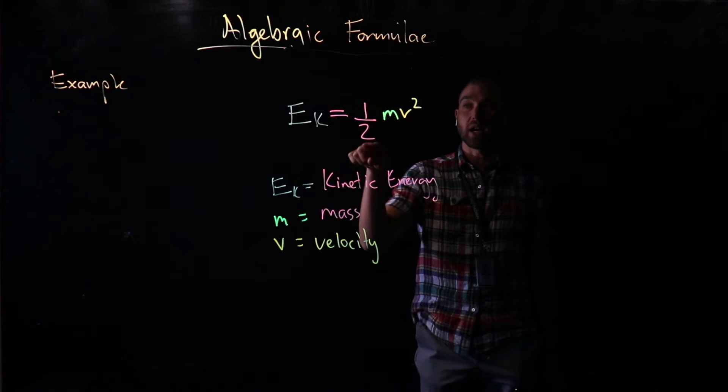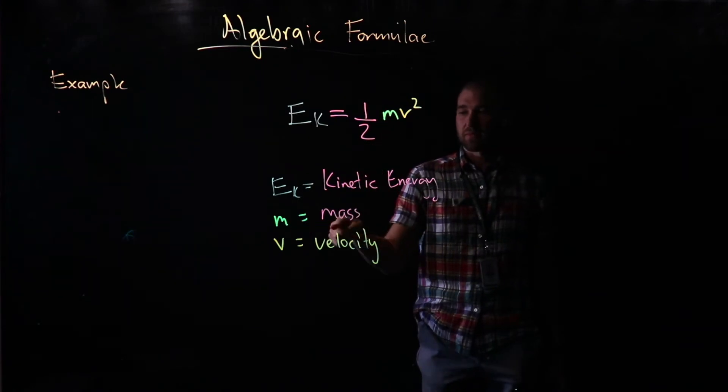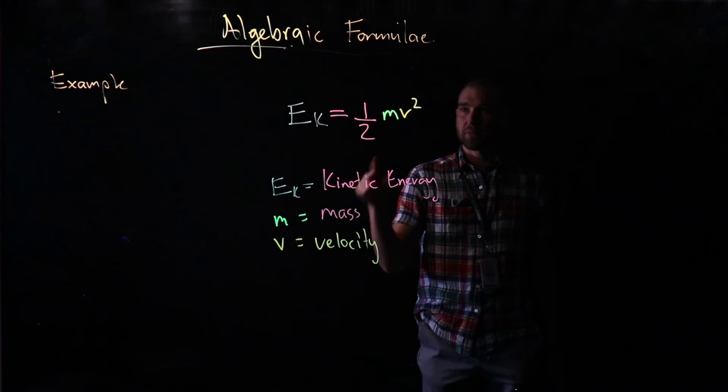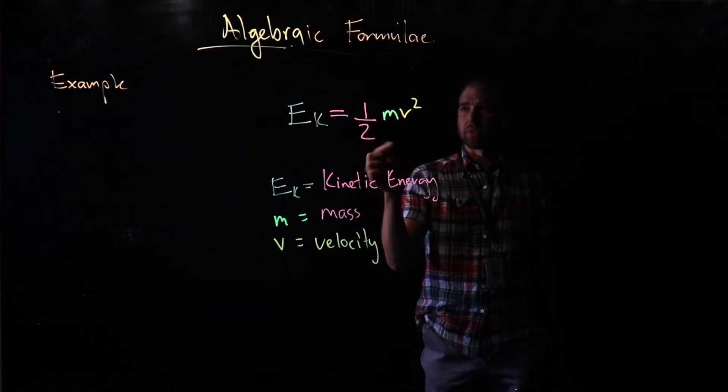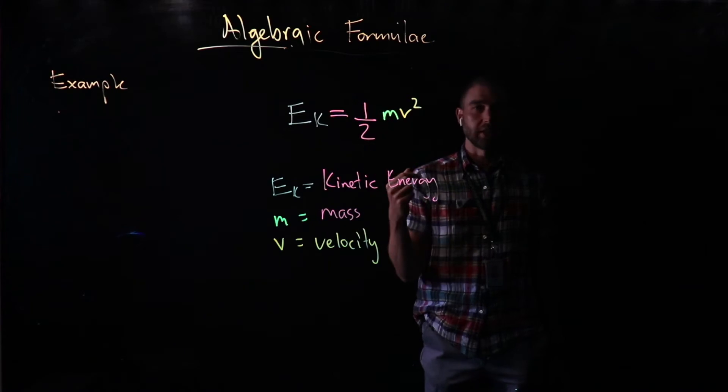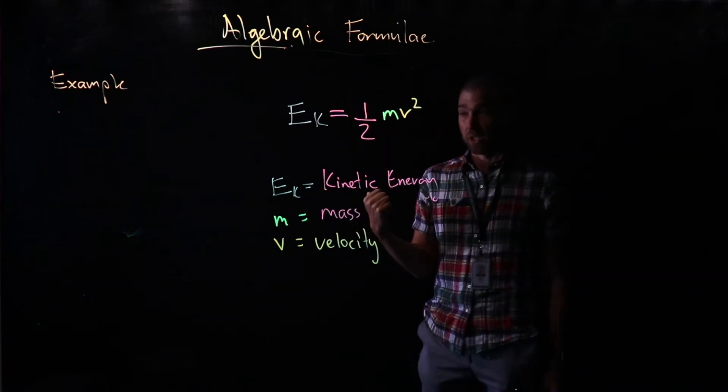Multiply that by the velocity squared. We don't have any time symbols in here, but if there's no symbol connecting our bits, we just multiply. That's the assumption.